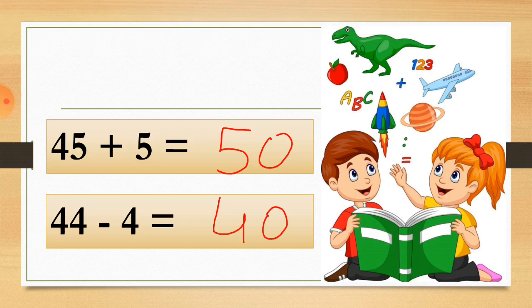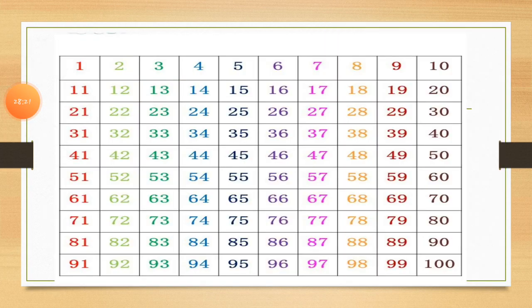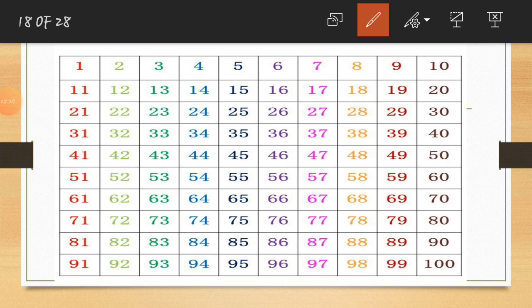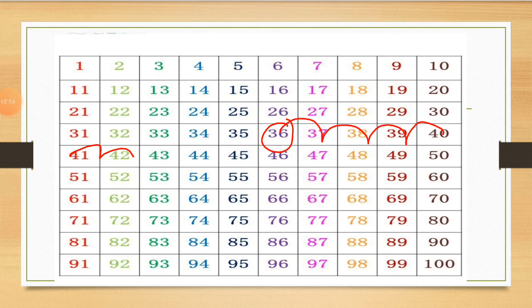Let's see one more example: 36 plus 6. We have to go right 6 steps. I circle 36 in the 100s grid and count: 1, 2, 3, 4, 5 and 6. From 36 we add 6 and we get 42. So 36 plus 6 equals 42.